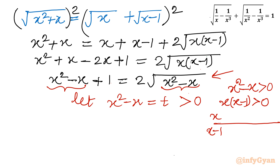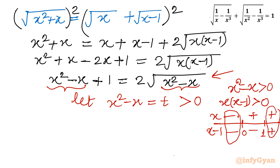Drawing the number line with 0 and 1 marked: before 0 both factors are negative so the product is positive; between 0 and 1 they have opposite signs so product is negative; greater than 1 both are positive so product is positive again. Our conclusion: the answer should not lie in between 0 and 1.